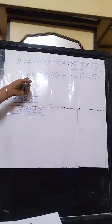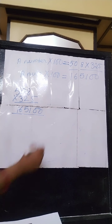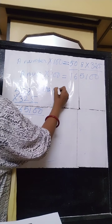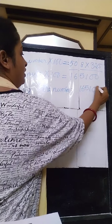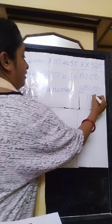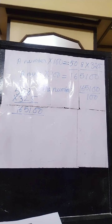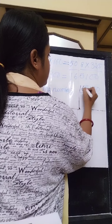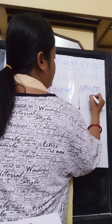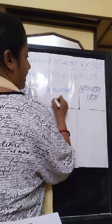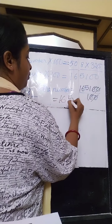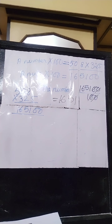So a number multiplied by 100 equals 165100. To find out that number, divide: the number equals 165100 divided by 100. By cancellation, the two zeros cancel, and you get the number as 1651. 1651 is the required number. In this way you have to solve the sum.